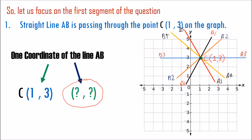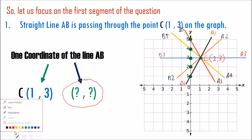Now, do you all realize that every possible line is cutting the y-axis at a point? All five lines on the graph are cutting the y-axis at a point, which means every line has a y-intercept value. Line A1B1 cuts the y-axis at point 1, line A2B2 at point 2, line A3B3 at point 3, line A4B4 at point 4, and line A5B5 at point 5.